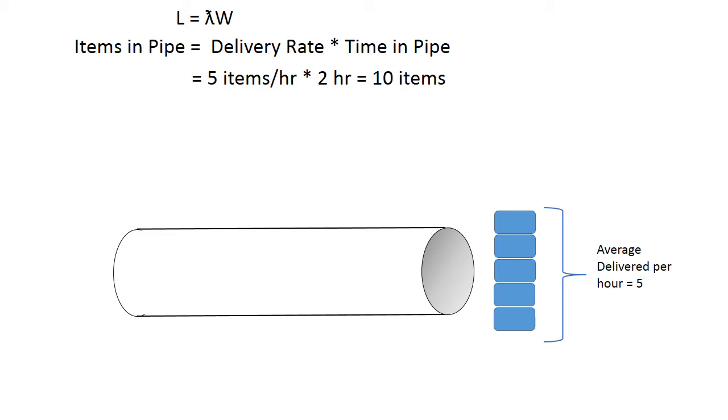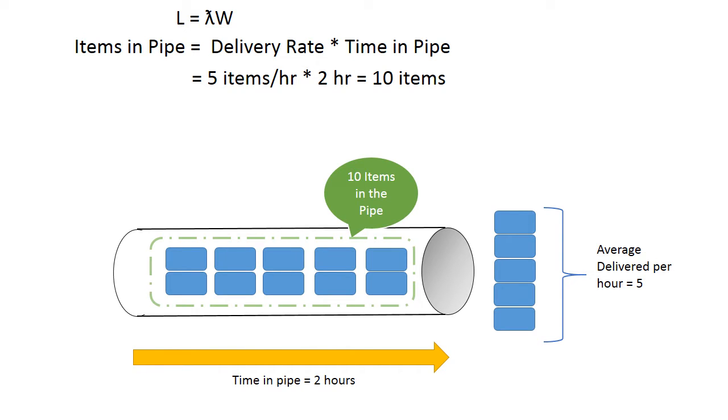So let's try explaining this with a pipe visual. Little's Law says the number of items in the pipe equals the rate that items leave the pipe multiplied by the average time an item spends in the pipe. So if five items exit a pipe per hour, and each item stays in the pipe for two hours, then there must be ten items in the pipe.